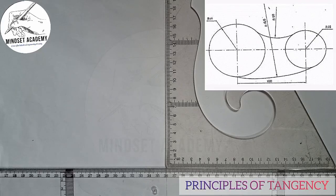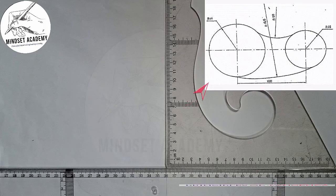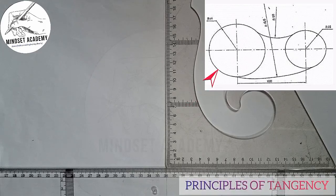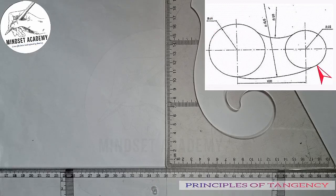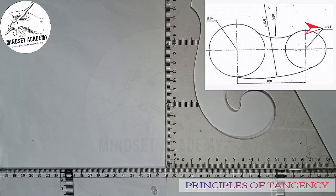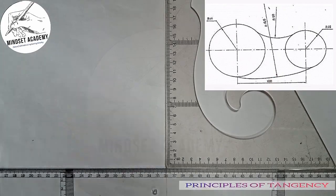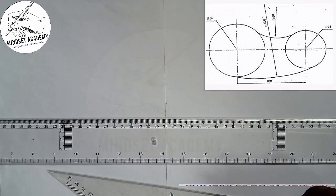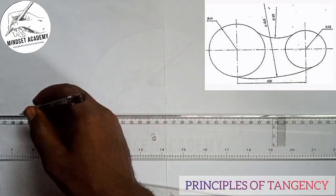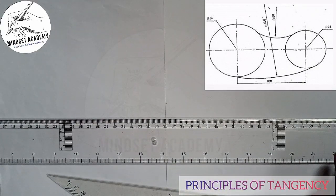The first thing you have to draw is the two circles. The first circle has the radius of 44 and the second circle has the radius of 32. They are 100 millimeters apart. So the first thing you should do is draw your horizontal axis in this manner.